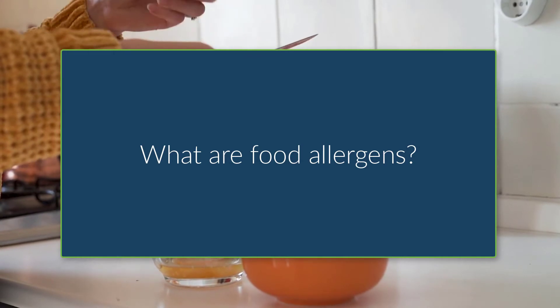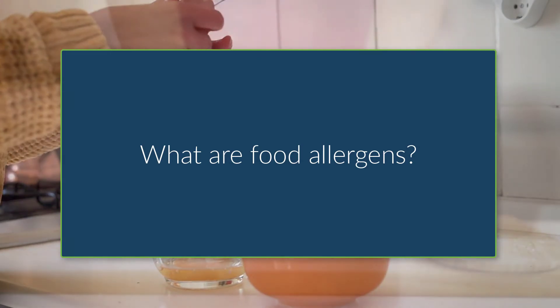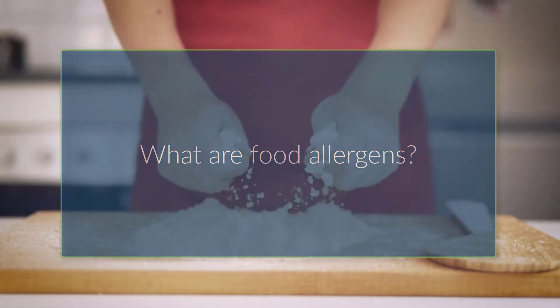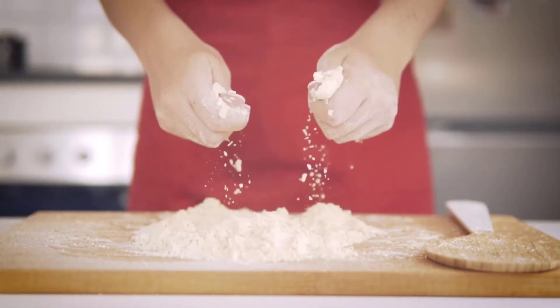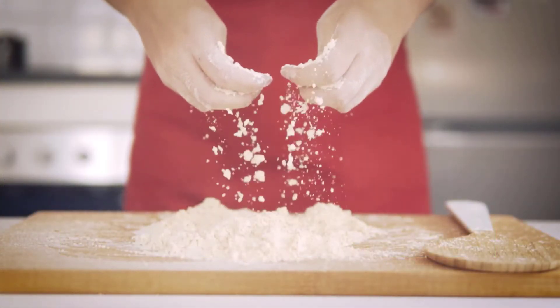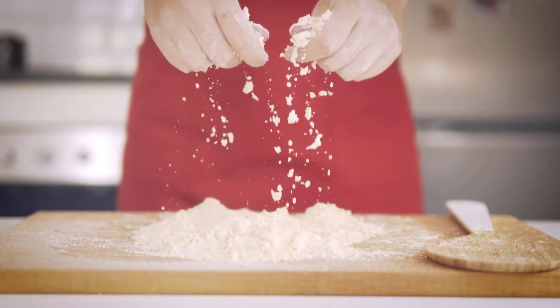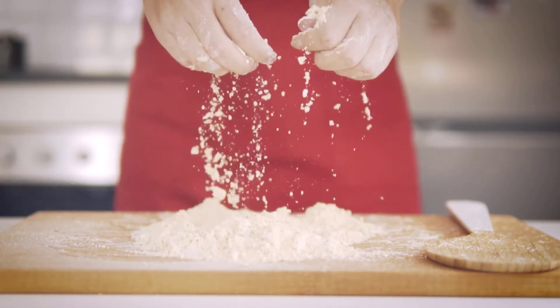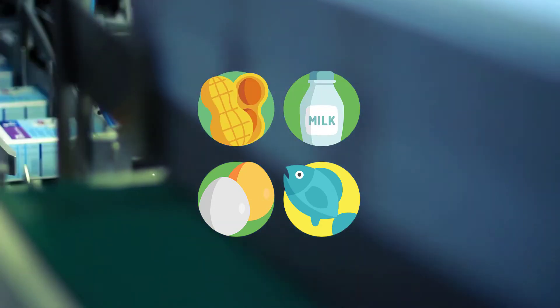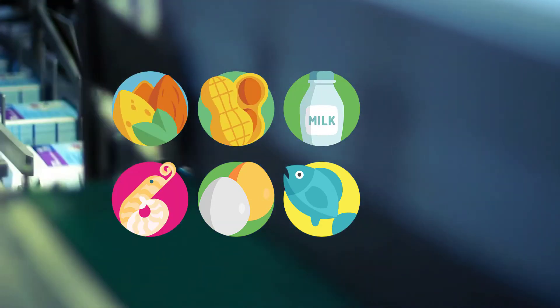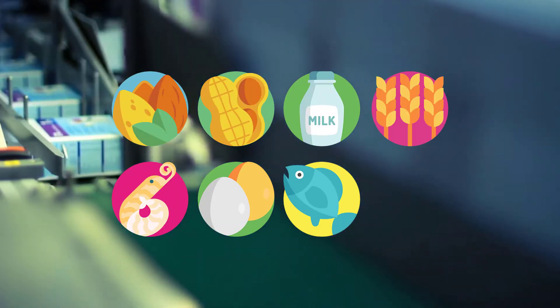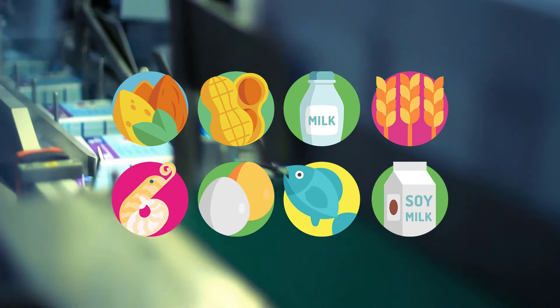What are food allergens? Food allergens are naturally occurring proteins in food that cause abnormal immune responses. The most common food allergens today are eggs, fish, milk, peanuts, tree nuts, shellfish, wheat, and soy.